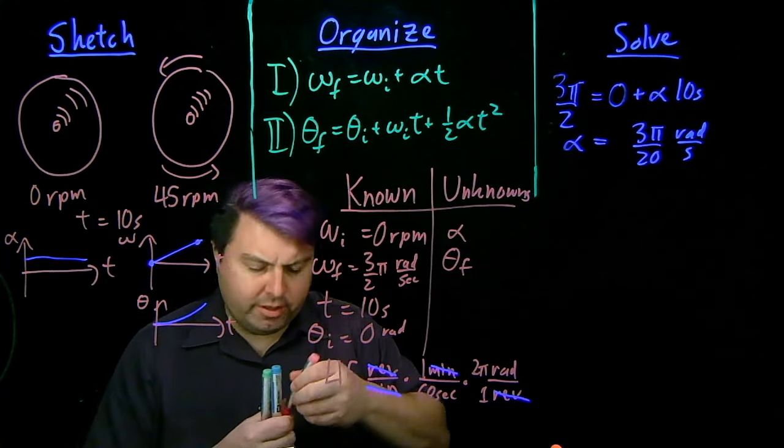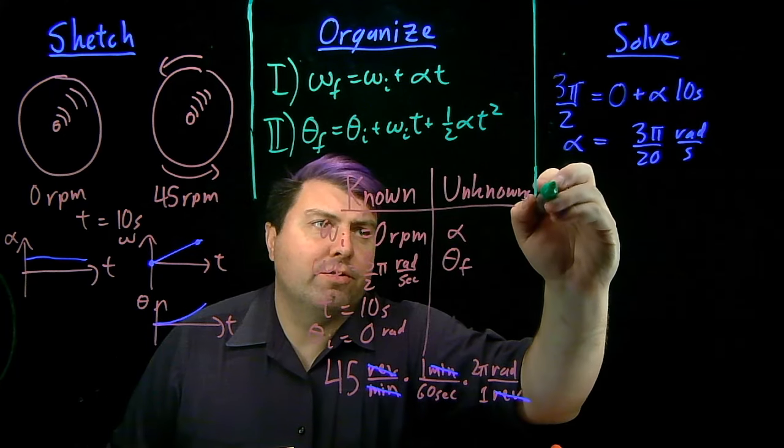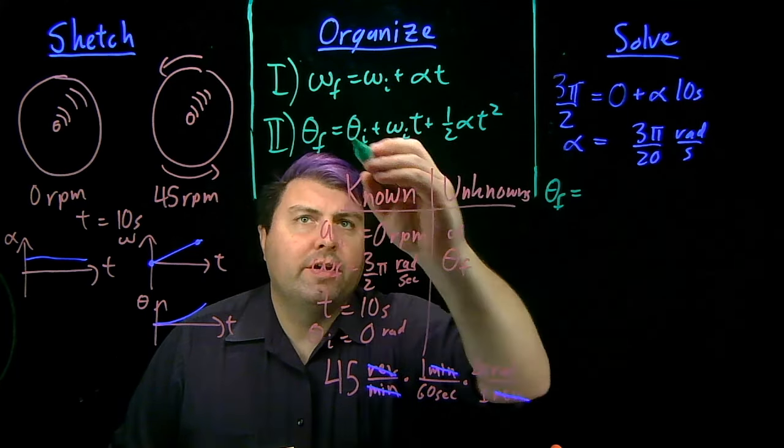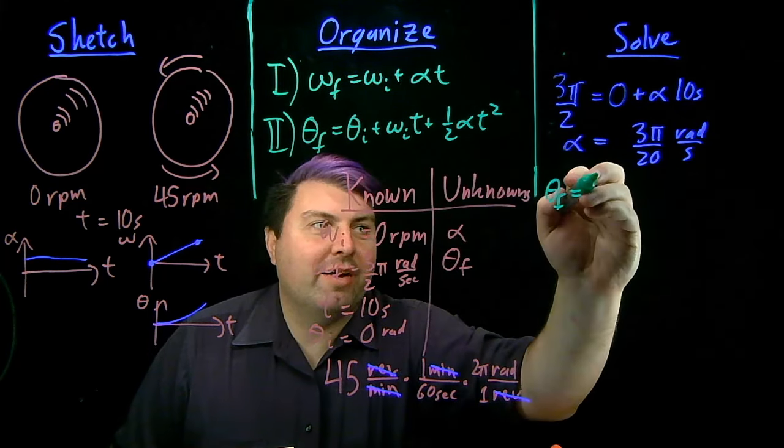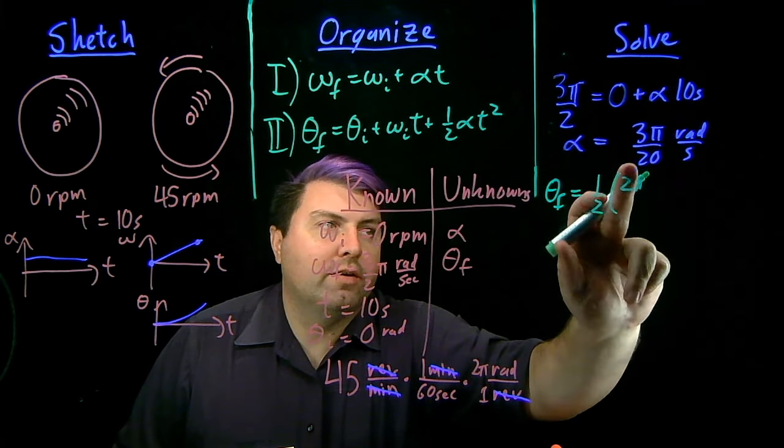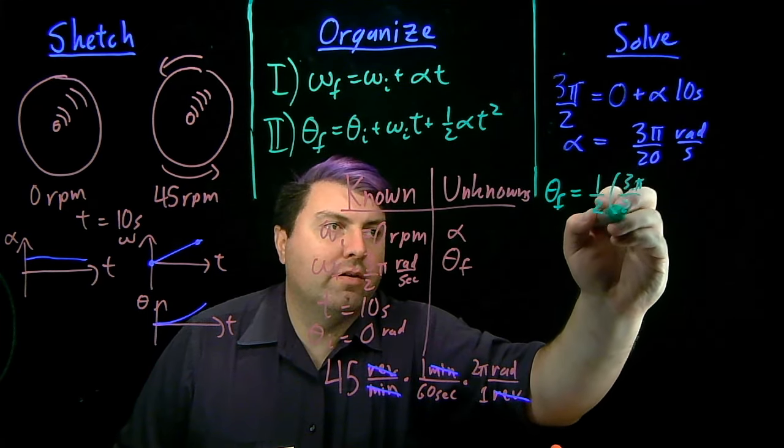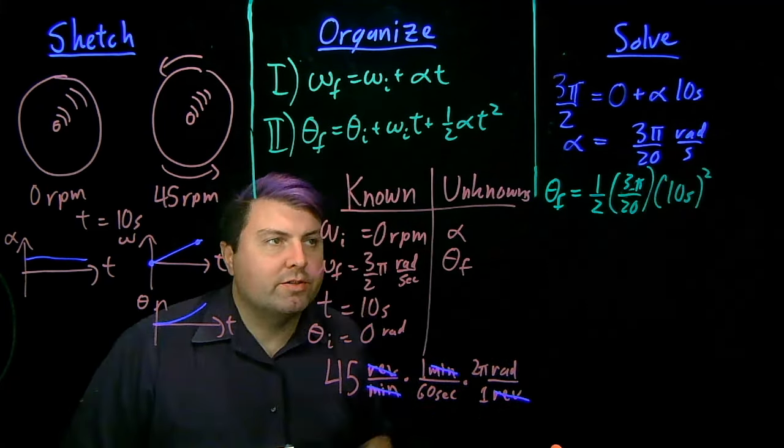And once we have that, then we can use that to find our equation 2. So now we have theta f equals zero, so don't need to write it. Omega i is zero, so don't need to write it. And then we have one half times alpha, which is 3 pi over 20 times t squared, which is 10 seconds quantity squared.